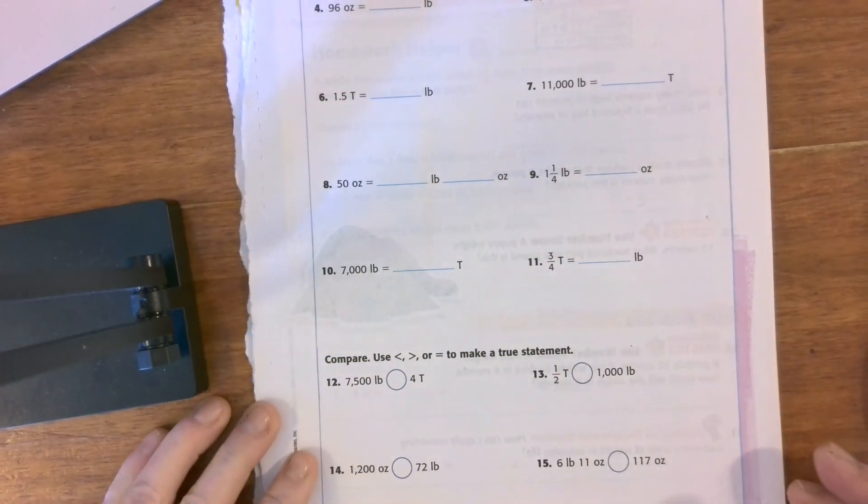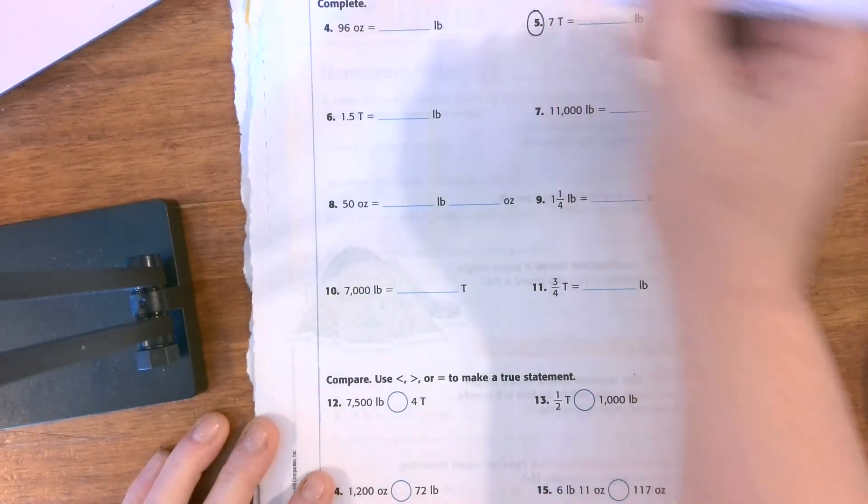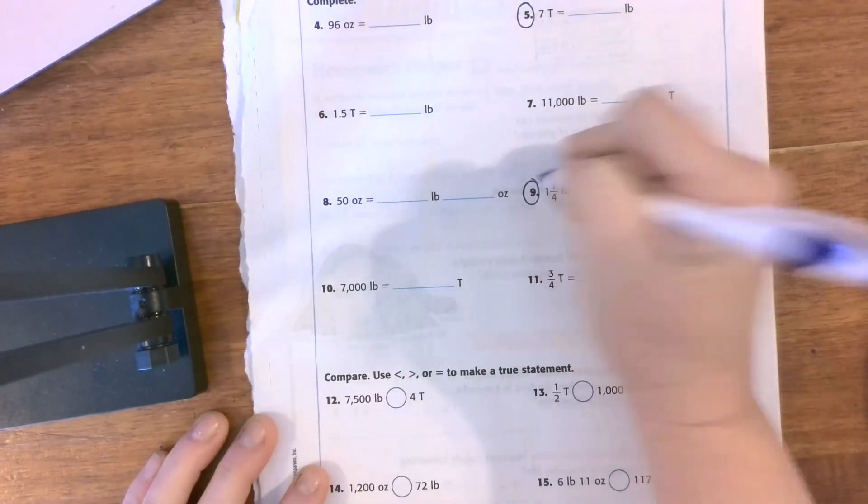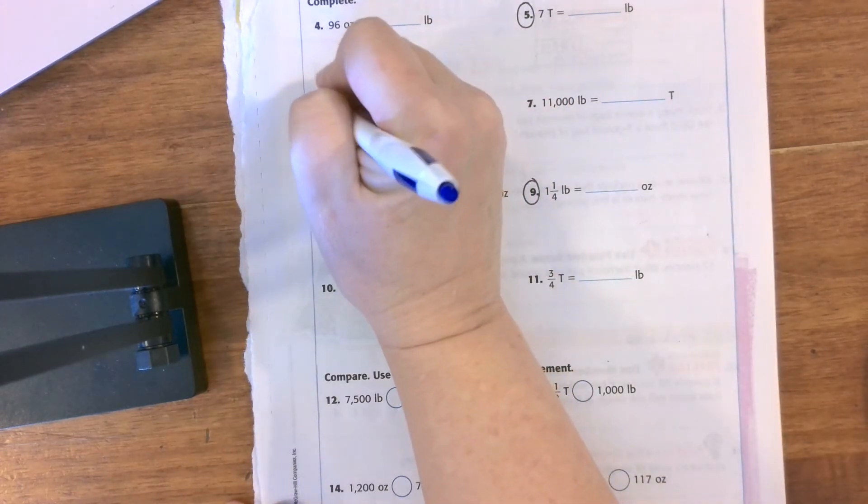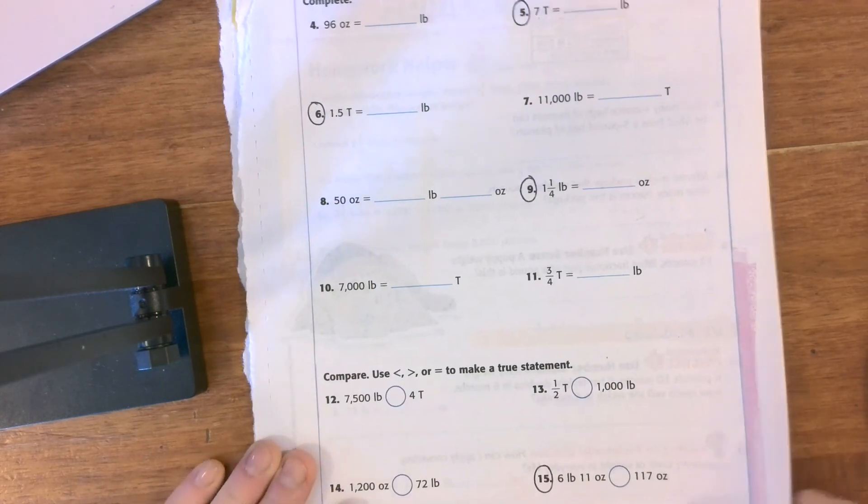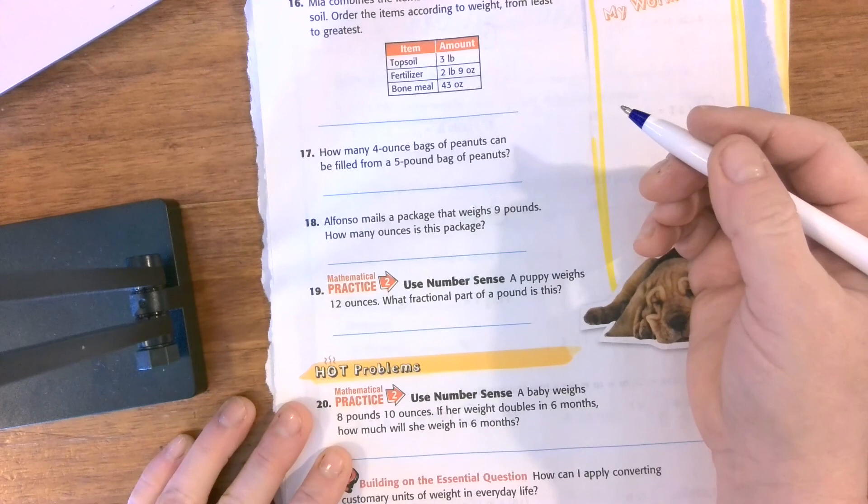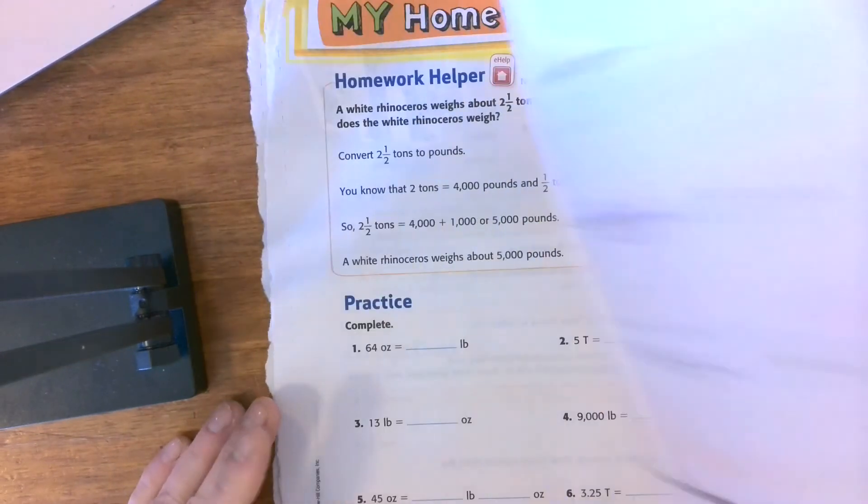We're going to do a few problems as a team to start with. We're going to do tons to pounds, then one that has a fraction, one that has a decimal, and one of our conversions. So we're going to do these four problems as well as problem 19, and then I'm going to ask you to complete the other ones as well as the homework on your own.